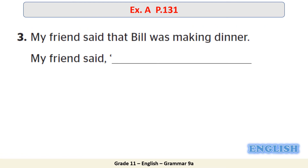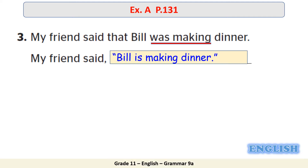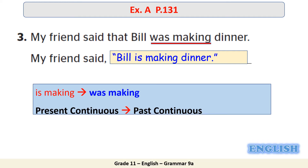Sentence number three: my friend said that Bill was making dinner. What needs to be changed here? The verb 'was making.' My friend said: 'Bill is making dinner.' We have 'is making' in the direct speech, which becomes 'was making' in the indirect speech — the present continuous becomes past continuous in the indirect speech.